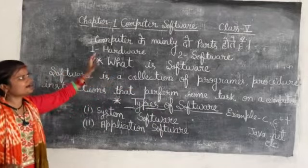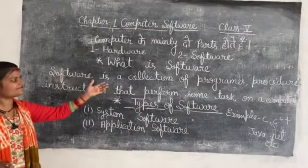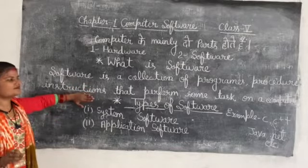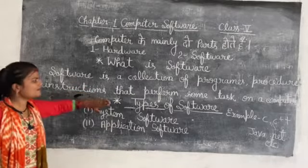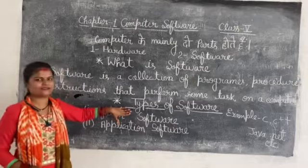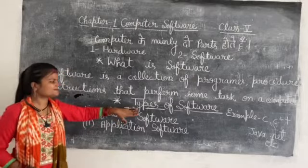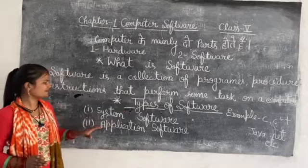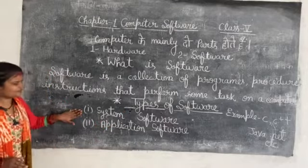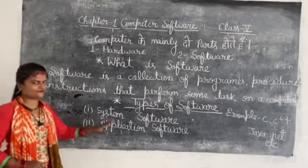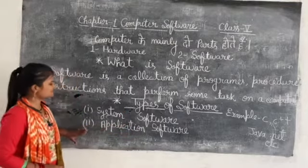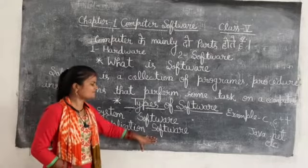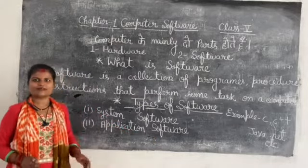This is how we learn the software. Now, the next part is: what are the types of software? The types of software — first is system software and second is application software.